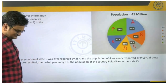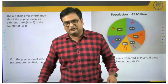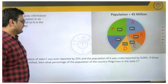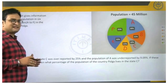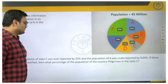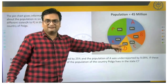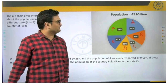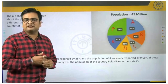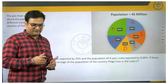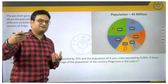The next question reads: if the population of state C was overreported by 25 percent and the population of A was underreported by 9.09 percent, and if these mistakes are now rectified, then what percentage of the population of the country Polga lives in state C? C is currently 10 percent and A is 20 percent of the total. Again, the question asks for a percentage, so it is in relative terms — we can assume convenient values.